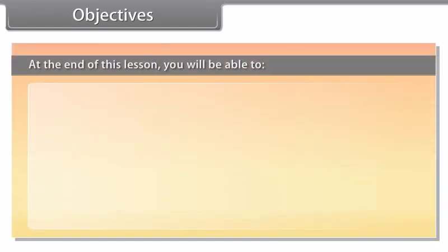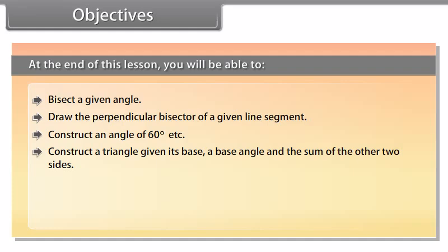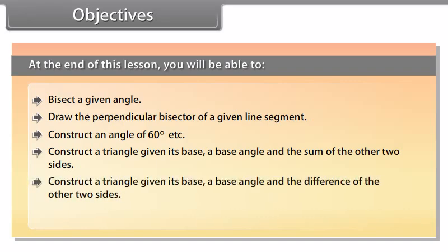At the end of this lesson, you will be able to: bisect a given angle; draw the perpendicular bisector of a given line segment; construct an angle of 60 degrees; construct a triangle given its base, a base angle, and the sum of the other two sides; construct a triangle given its base, a base angle, and the difference of the other two sides; and construct a triangle given its perimeter and its two base angles.